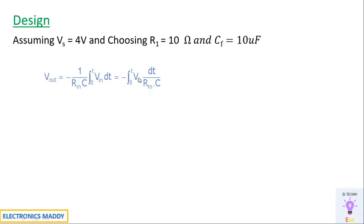When you simplify this, you will be getting minus 1 by j·omega·RC times Vin. One important point to note is we don't know the value of T, so we have to find it. For simplicity, I have not gone into detail with the calculation portions. Based on the value of T — if T is 1, you get this expression; if T is 2, you get another constant. So I have assumed T equal to 1 and found this expression.